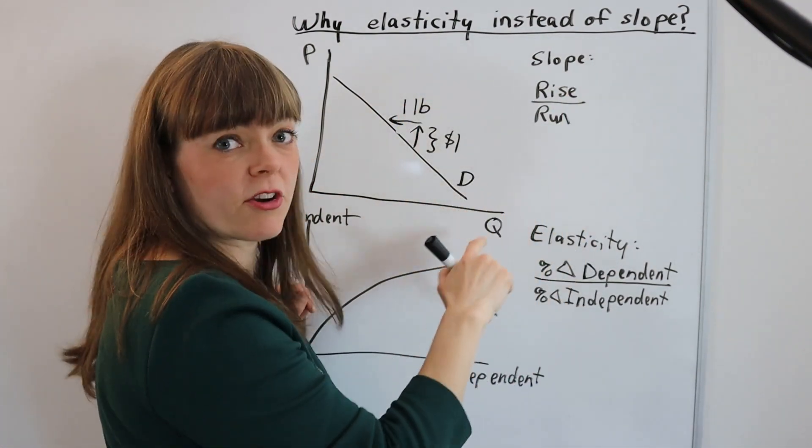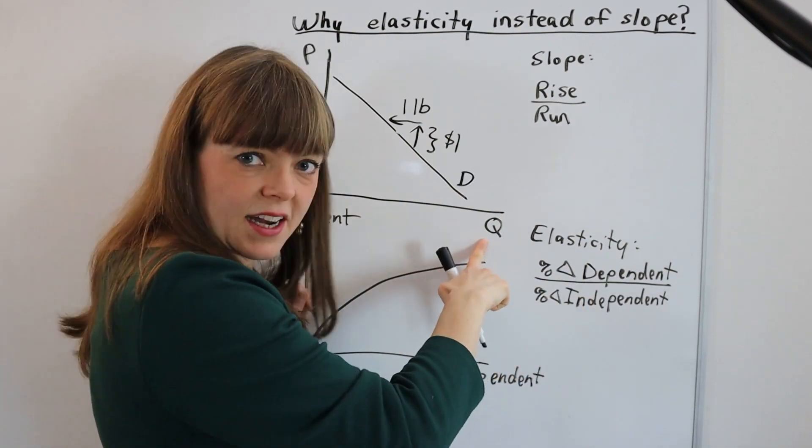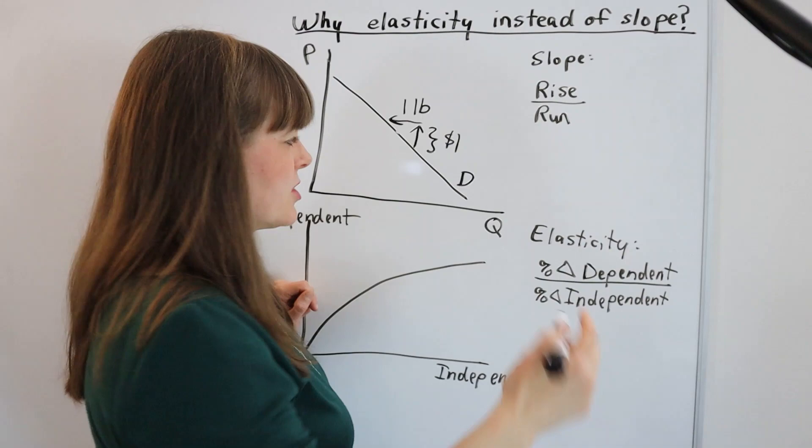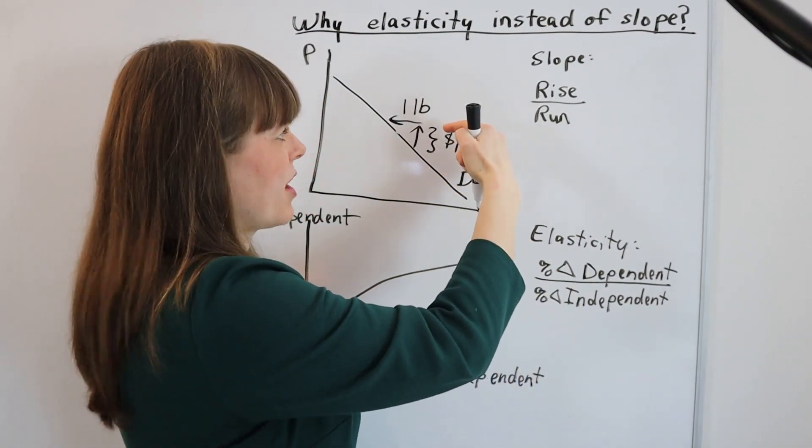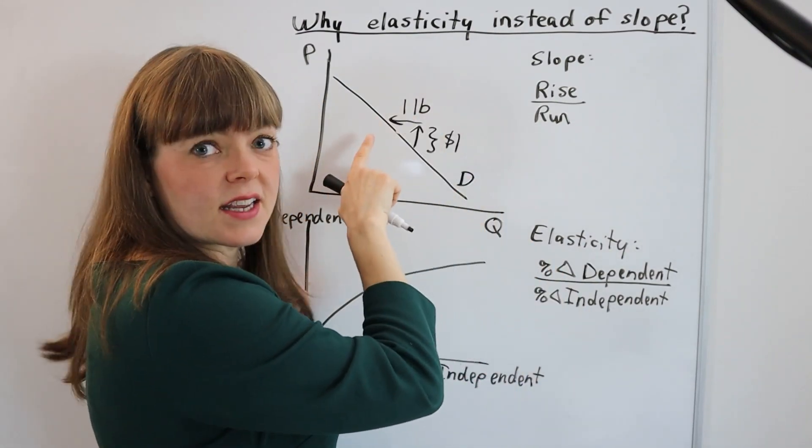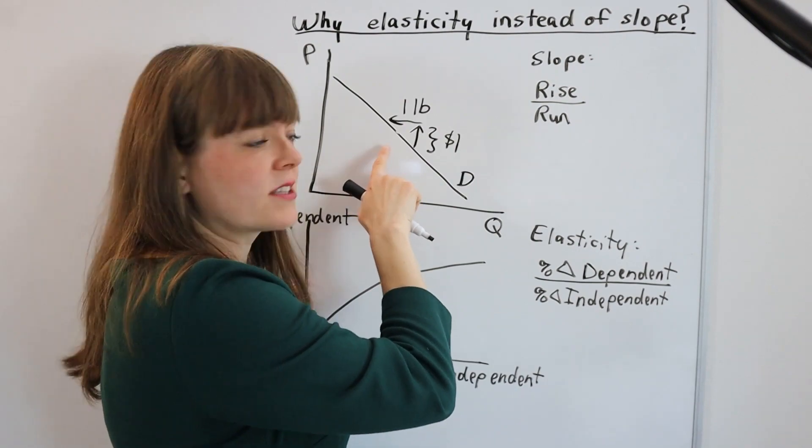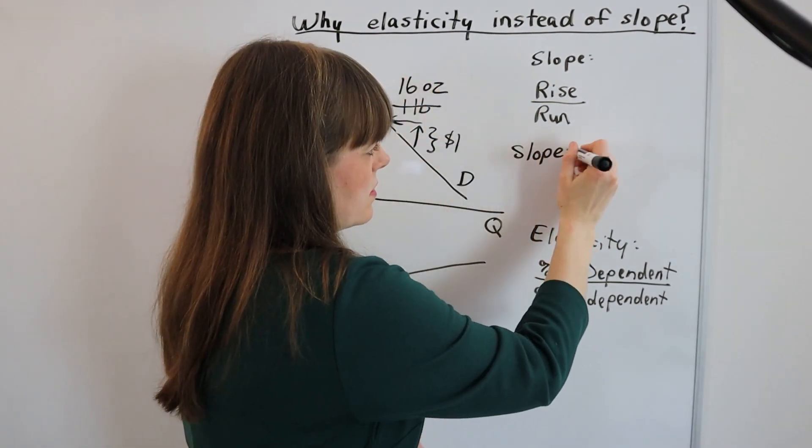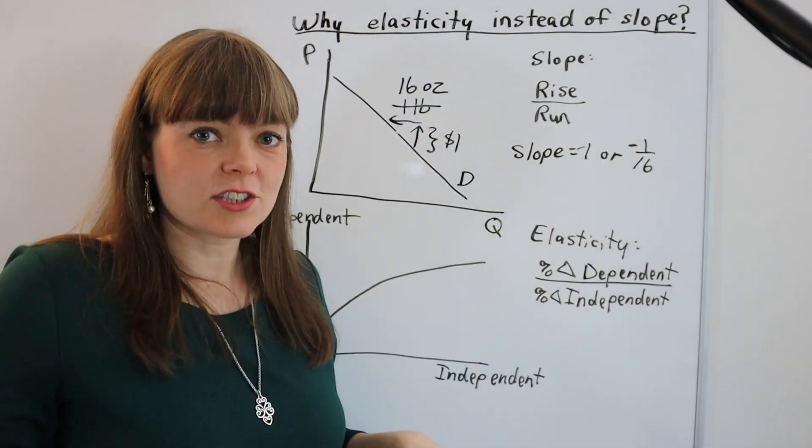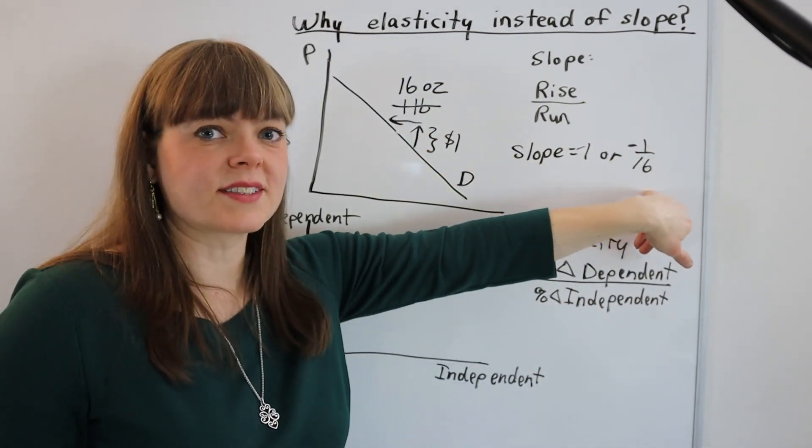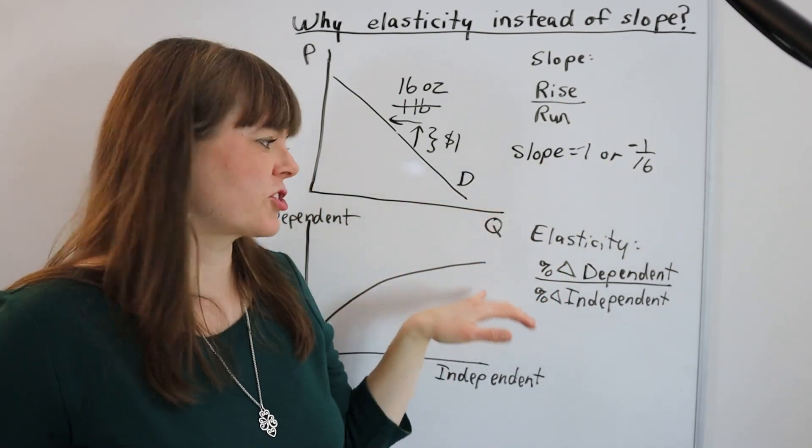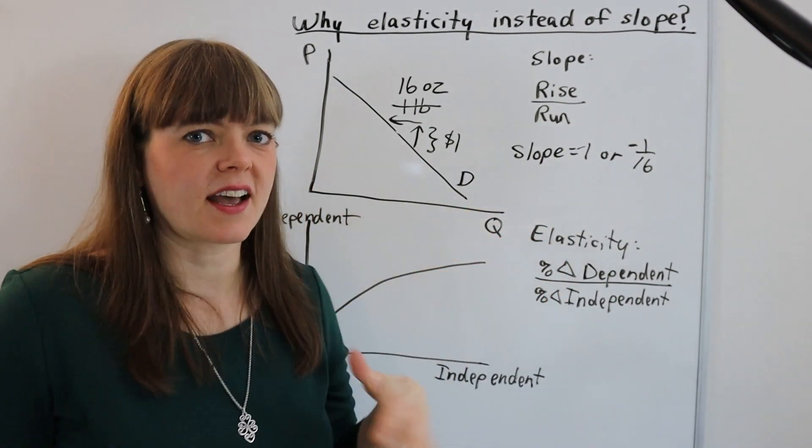Rise over run says the slope here is one, but if instead we started measuring this in terms of ounces, we're going to have the same situation: a $1 increase in the price leads to a 16 ounce decrease in the quantity of cheese purchased. So that slope goes from negative one to negative 1/16th just by changing how we measure cheese, how we measure the x-axis.